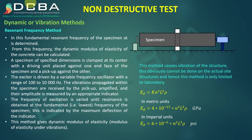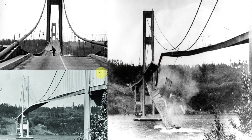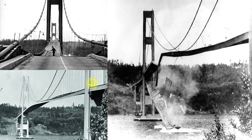Another famous example of destruction by resonant frequency is the Tacoma Narrows Bridge. Wind blowing across the bridge caused it to vibrate at its fundamental resonant frequency, resulting in violent oscillations and severe distortion visible in both video footage and images, ultimately causing the bridge to collapse. This is one of the most well-known examples of structural failure due to resonant frequency.